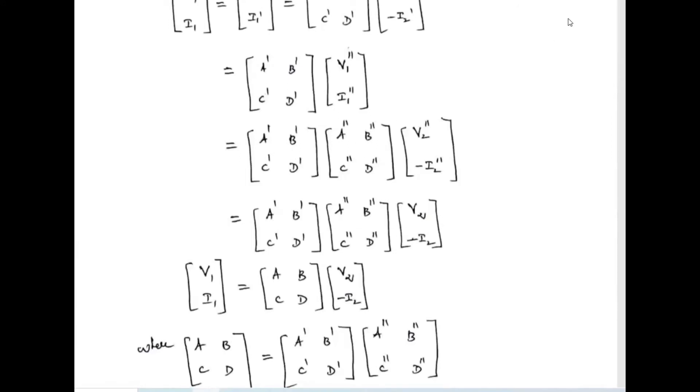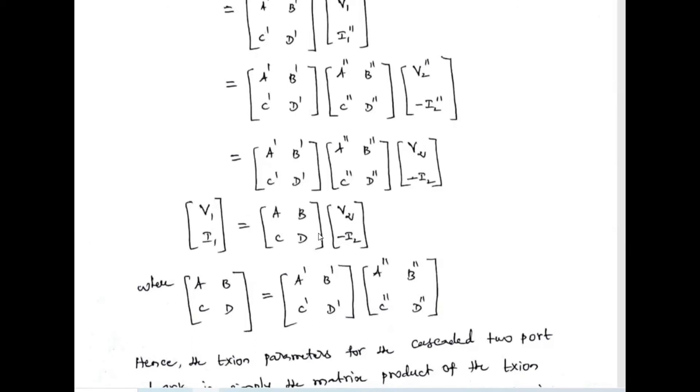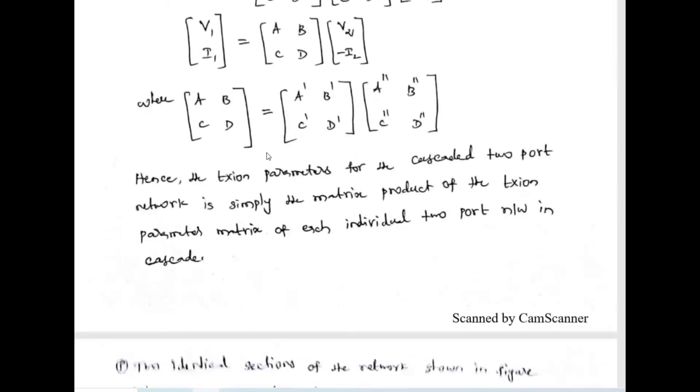This gives a two-by-two matrix multiplication. The first matrix is the transmission parameter of the first network, and the second matrix is the transmission parameter of the second network — their multiplication gives the overall parameter. From this, V1 and I1 can be written as the overall transmission parameter times the output voltage and output current. Therefore, if two networks are connected in cascaded connection, the overall transmission parameter is nothing but a multiplication of the individual transmission parameters.